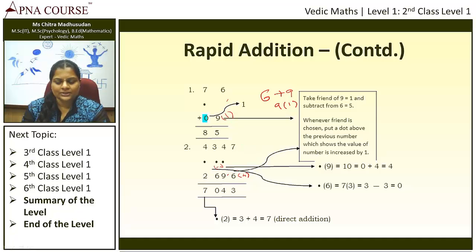In the initial stage, as I said, you can write the friends in bracket and you can put this minus sign here so that it will be easy for you to do the calculation. Later it can be avoided. Later you can do it mentally without any numbers writing over here. Whenever the friend is chosen, the dot should be kept on top of the number, which indicates that the value increases by 1. That you should remember.